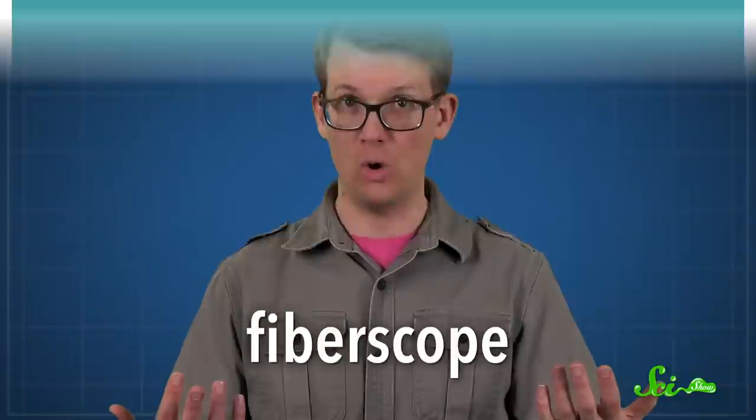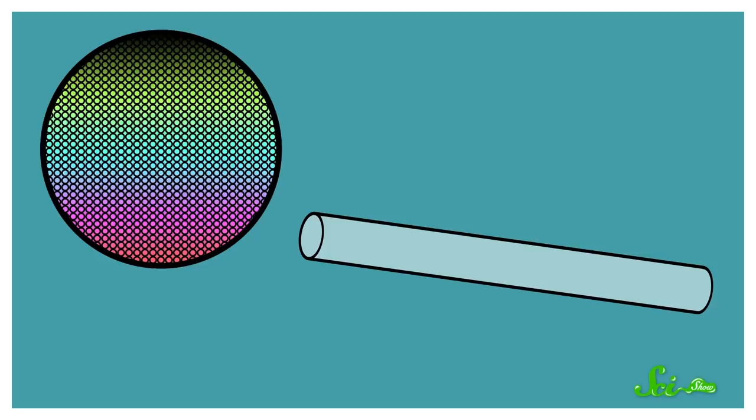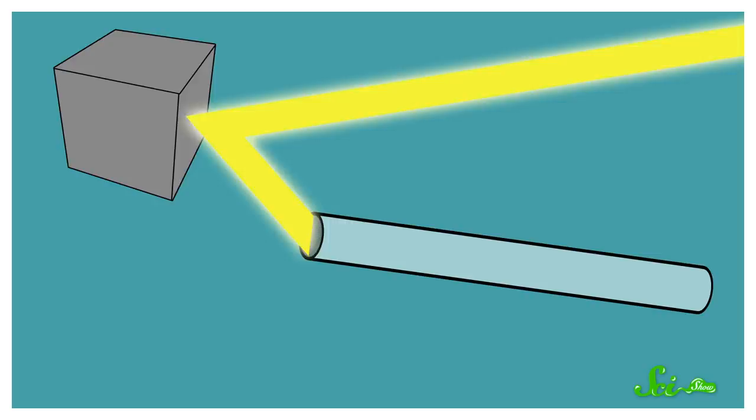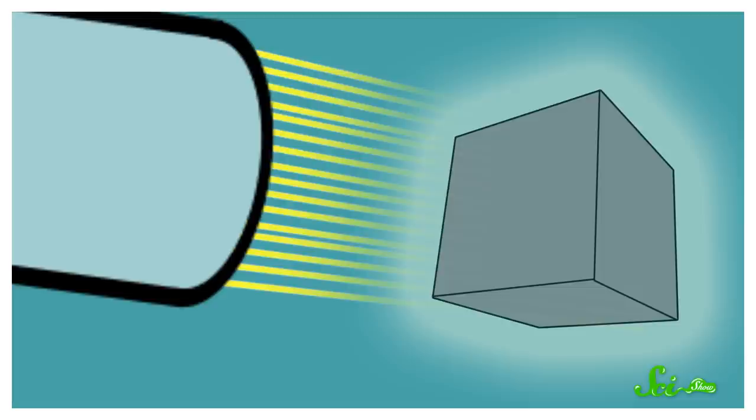They called it a fiberscope. It was a bundle of thousands of glass fibers, 75 centimeters long, and each fiber was sort of like one pixel. Light bouncing off an object would enter one end of a fiber, and then come out the other end. Then you could combine all those pinpricks of light to form an image. Those images were clear and sharp. And the fibers were bendy, so light could travel through the body in curved paths, which was a huge success.